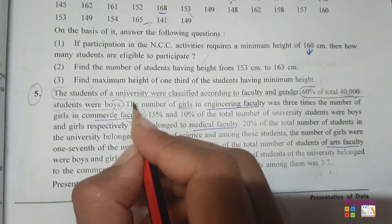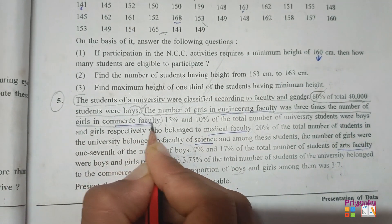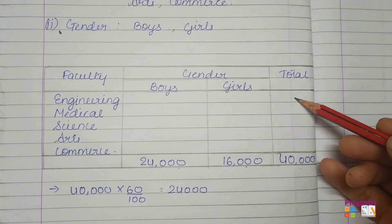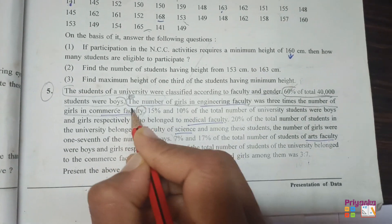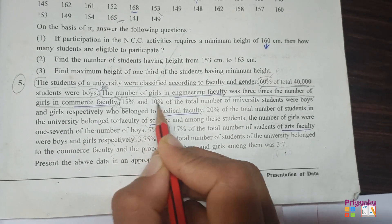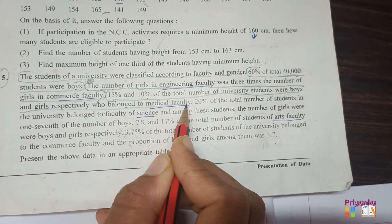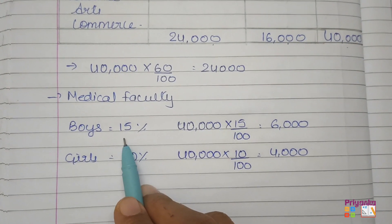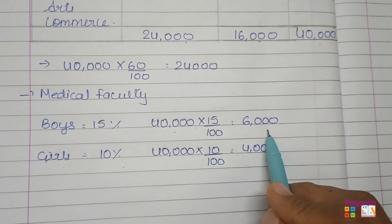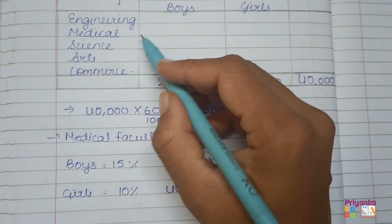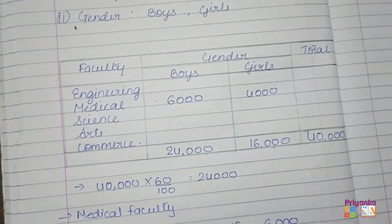The information about engineering girls is kept pending as we don't yet have the commerce figure. Moving to medical faculty: 15% of 40,000 gives 6,000 boys, and 10% of 40,000 gives 4,000 girls in medical. So we write 6,000 boys and 4,000 girls for medical. For science faculty: 20% of 40,000 gives a total of 8,000 students in science.